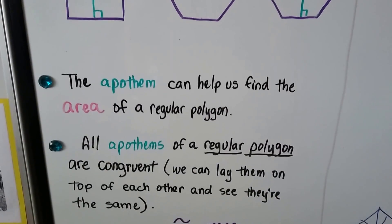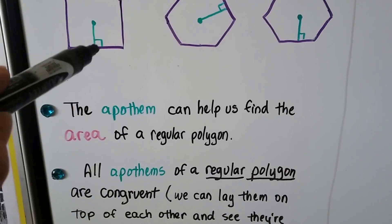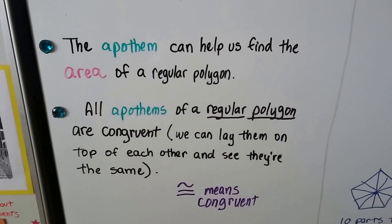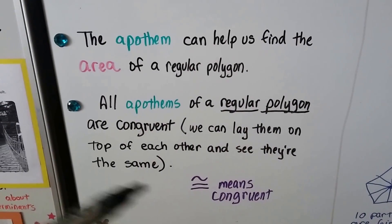And the apothem can help us find the area of a regular polygon, this little line segment right here going to this flat side. Now all apothoms of regular polygons are congruent to each other and we can say that they lay on top of each other and they're the same.